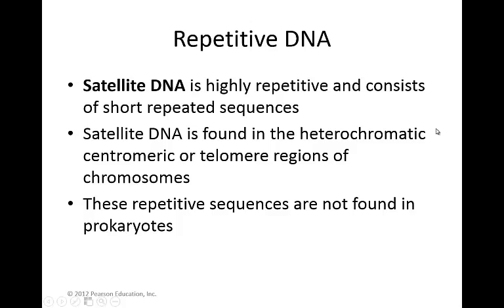In terms of satellite DNA, satellite DNA is going to be very highly repetitive and it consists of short, repeated sequences. It is found in some heterochromatin regions, such as in the centromeres or the telomere regions of chromosomes. These are areas that are not going to be containing genes — they're just going to be very short repetitive sequences. And these repetitive sequences are not found in prokaryotes, just the eukaryotes.